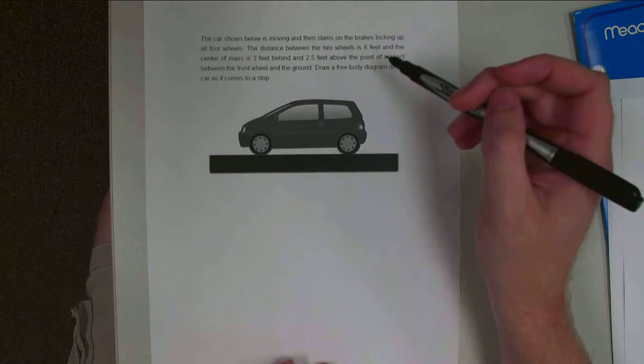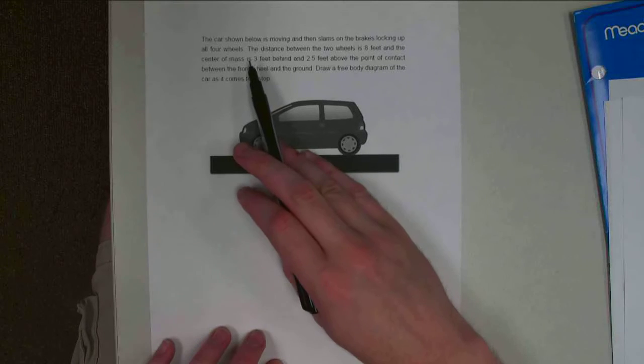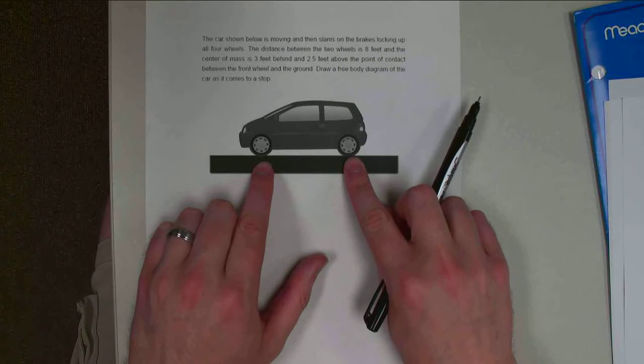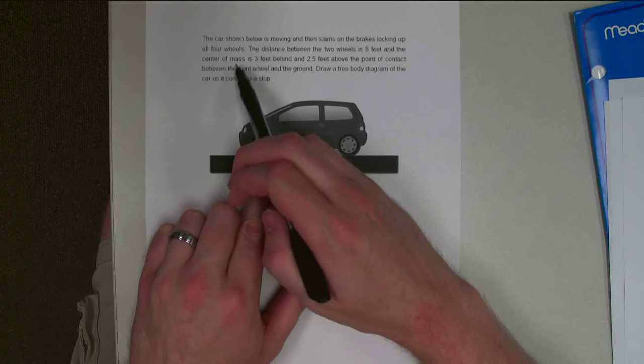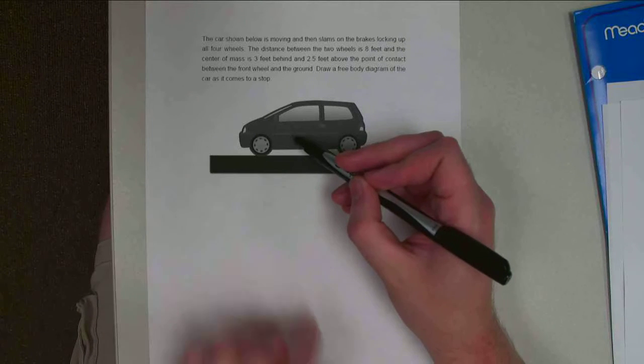So it locks up all four wheels, which means it's sliding along the ground now. The distance between the two wheels is eight feet, and we know that the center of mass is three feet back from the front wheel and 2.5 feet up from the ground.